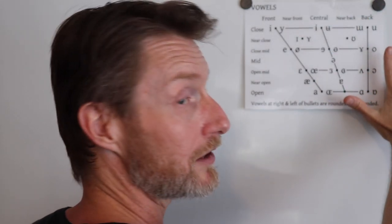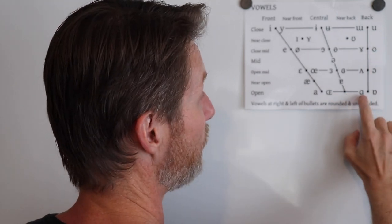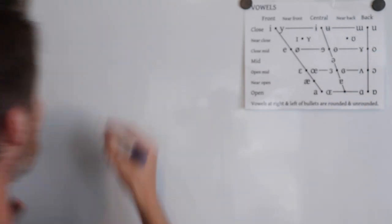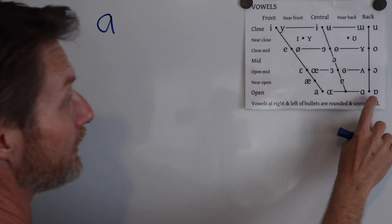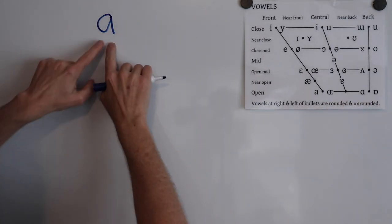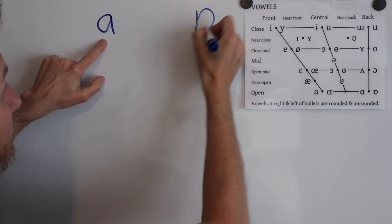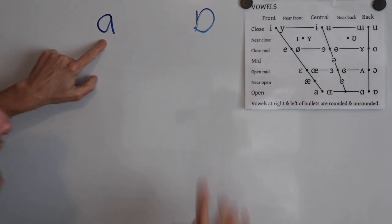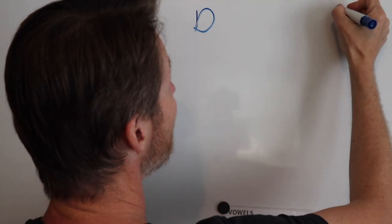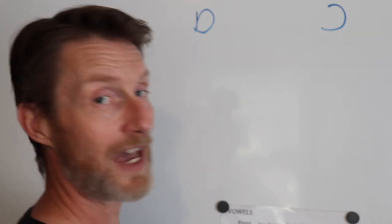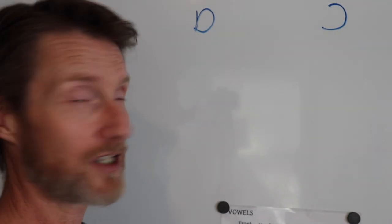We've got the AH, like father, which may be written as AH, and we've got this rounded version of that. So this is the script A, and this is the turned script A, and then just above that, we've got what's commonly called the open O. That one is like a backward C.